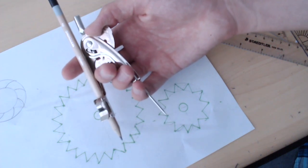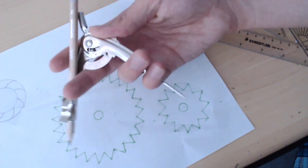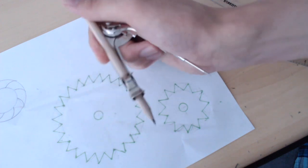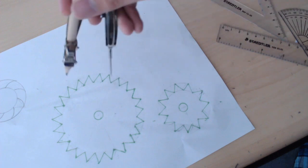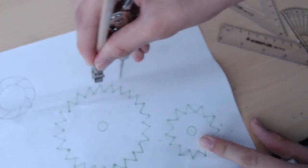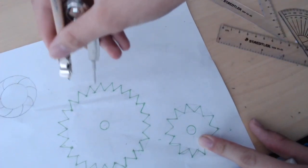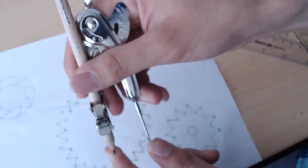There are sets of compasses and dividers which lock in the position. This doesn't, so what happens is as we draw out the arcs of the gears teeth, this compass will actually drift out a little bit.